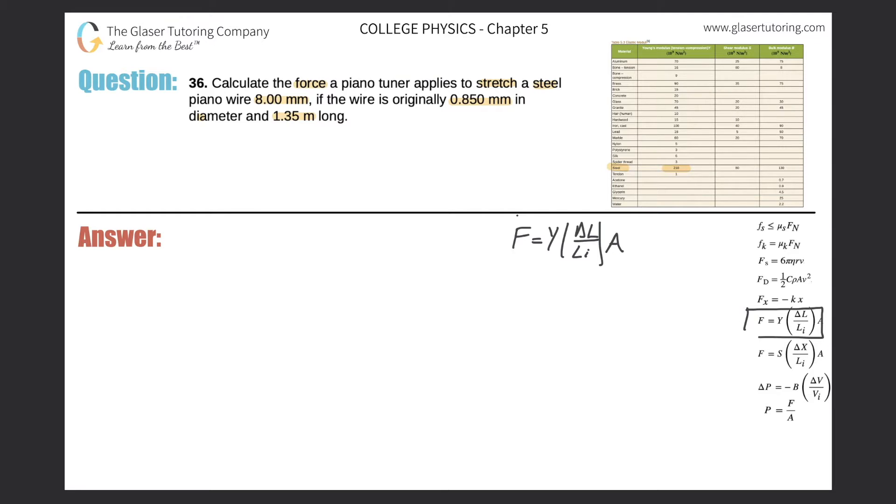Do we know the change in length that the piano string changed by? Well, it says to stretch the piano wire eight millimeters. So we do know the value, but I have to have everything in meters in my formula. So in terms of my delta L value, it will be 8.00 millimeters. But that's also the same thing as saying 0.008 meters. Just move the decimal three places to the left or divide the value by 1,000.